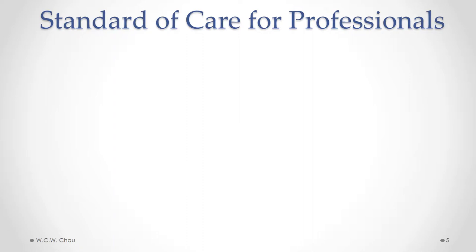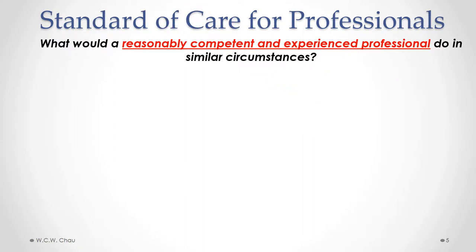If the person being sued for negligence happens to be a professional, such as a lawyer, a doctor, an accountant, or an engineer, then we don't apply the general standard of a reasonable person because a reasonable person does not have the expertise or training of any of those professionals. So we apply a higher standard to professionals. The question that we ask is, what would a reasonably competent and experienced professional do in similar circumstances?